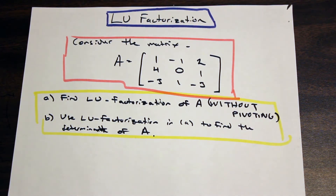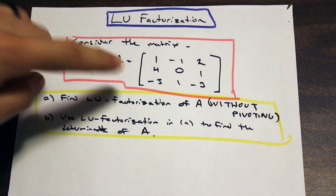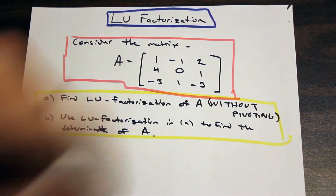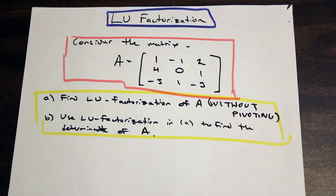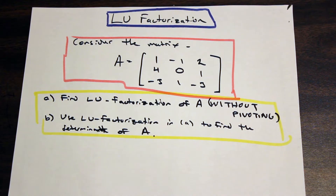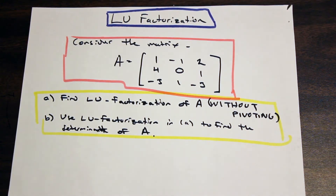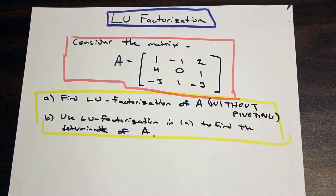Let's start with A. What is LU factorization? We row reduce, and from that row reduction, when we have the lower left triangular portion of the matrix as zero, we can split the matrix into two matrices L and U, where L times U equals A. So we're breaking A up into two separate matrices.